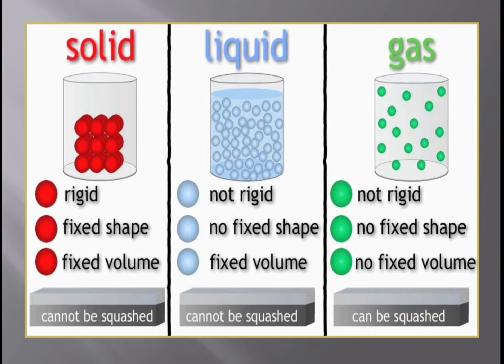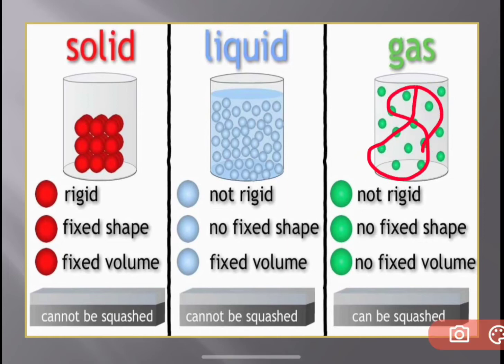Next, gases. The particles in gas are very free and very far from each other. Can you see the space in between the particles? They are very free. The particles are not arranged in a proper way — there is no regular arrangement.